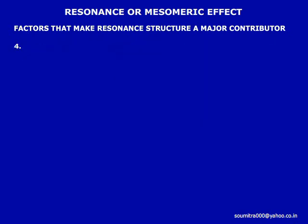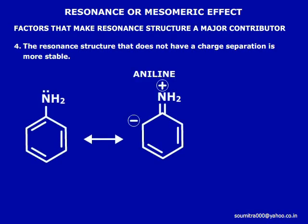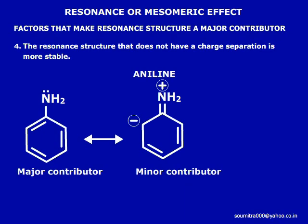Point number four: the resonance structure that does not have a charge separation is more stable. Let us draw the resonance structures of aniline. Structure one is more stable because structure two has a charge separation and is a dipolar resonance form.